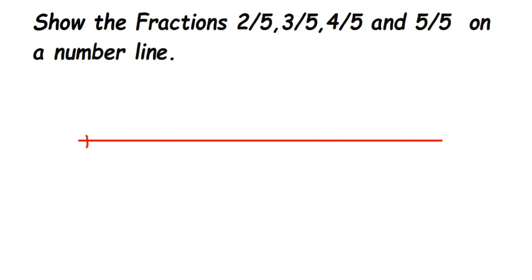Remember, whenever you're dividing, the first thing you should look at is the denominator. All the numbers here have denominator 5, which means we're dividing 0 and 1 into 5 equal parts.